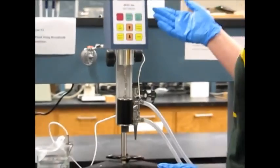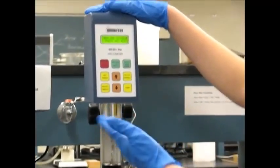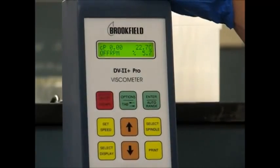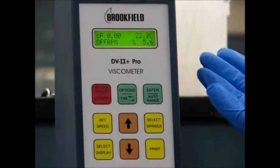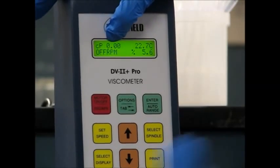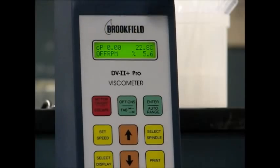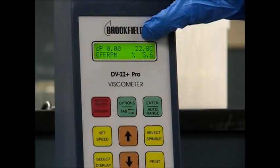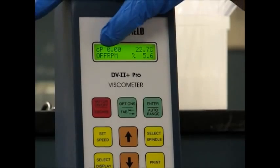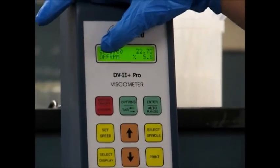Since we've replaced the spindle, we're going to keep following the directions. There's four different things that you can see from this. You can see the viscosity, once it will measure once it's turned on. You can see the temperature of the fluid. You can see the percent torque, and you can see the rpms. Right now, it's off.